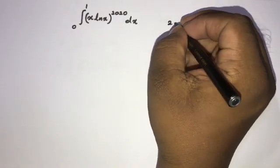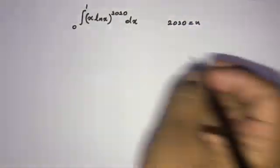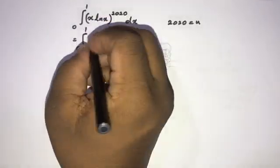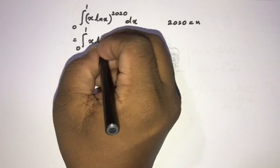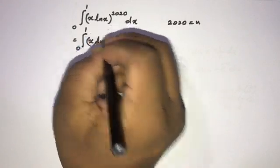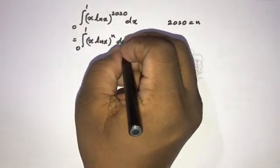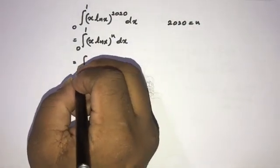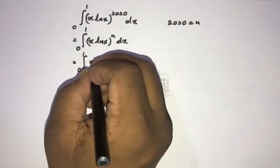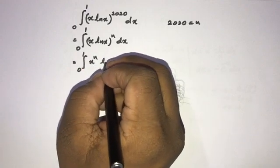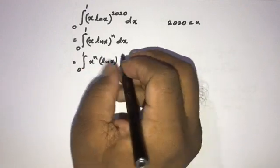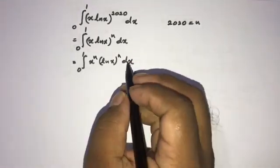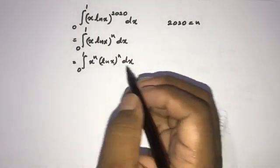I am going to take n equal to 2020. Now we can write this as the integral from 0 to 1 of x times the natural log of x to the nth power dx. We can also write this as the integral from 0 to 1 of x to the nth power times the natural log of x to the nth power dx.